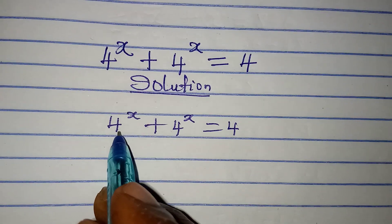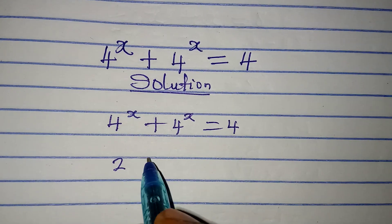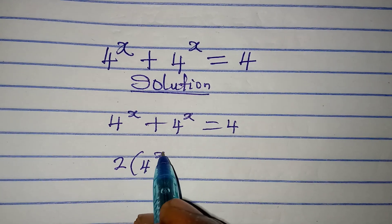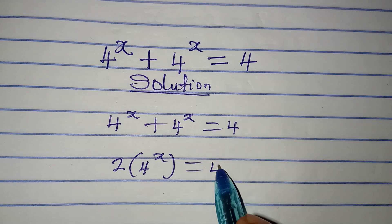Now how many 4 to the power of x do we have? We have 2 times 4 to the power of x, and this is equal to 4.